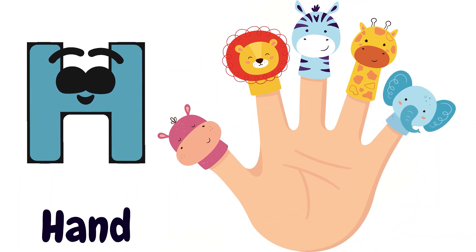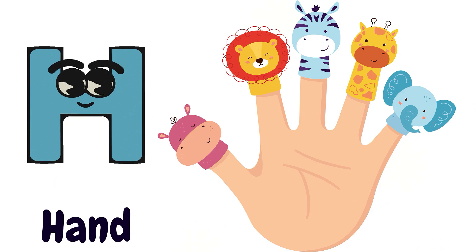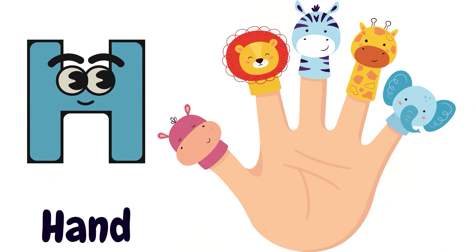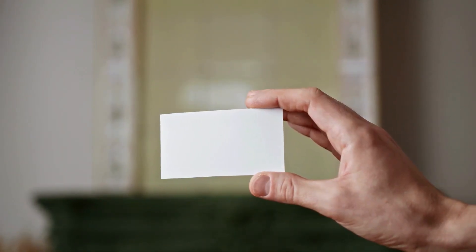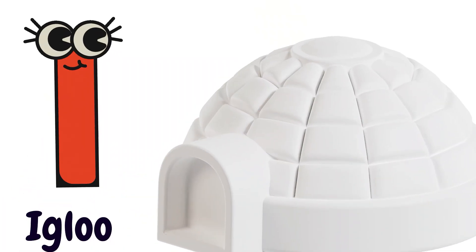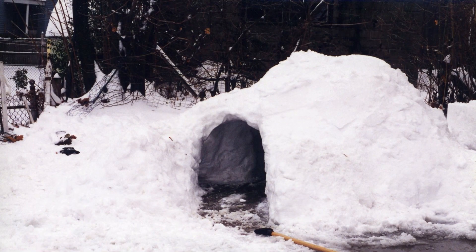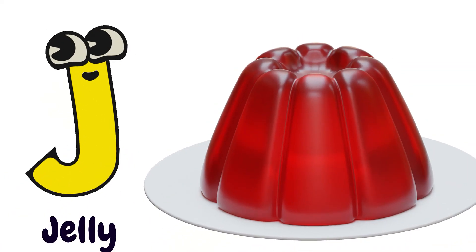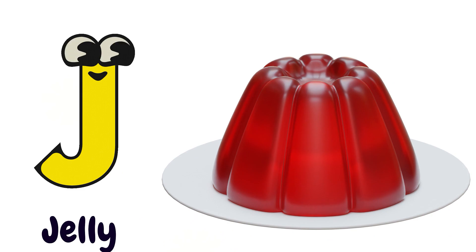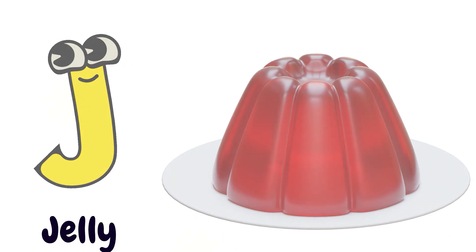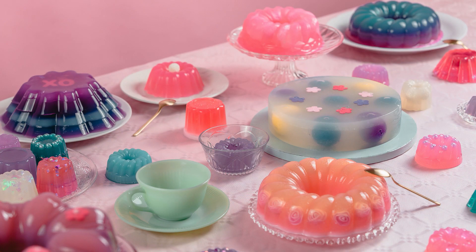H is for Hand. H, H, H, H, H, Hand. I is for Igloo. I, H, H, H, H, Igloo. J is for Jelly. J, J, J, J, Jelly.